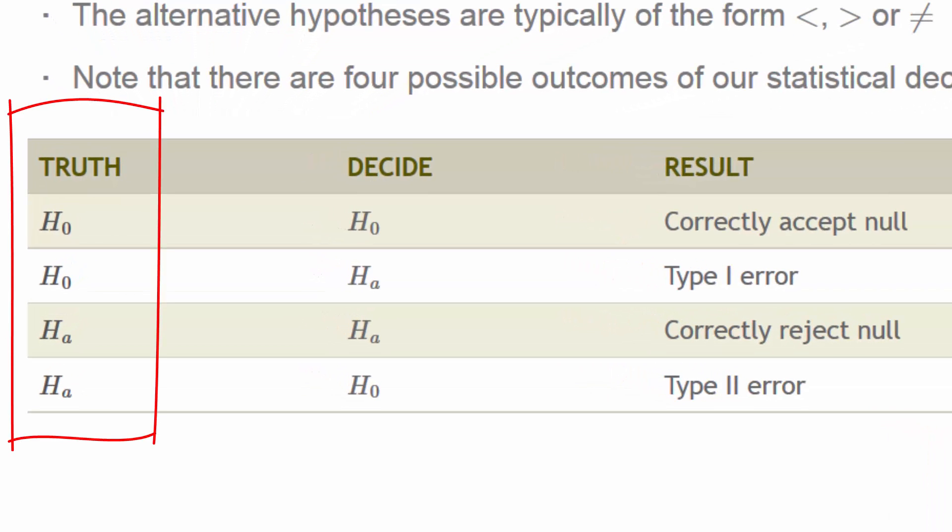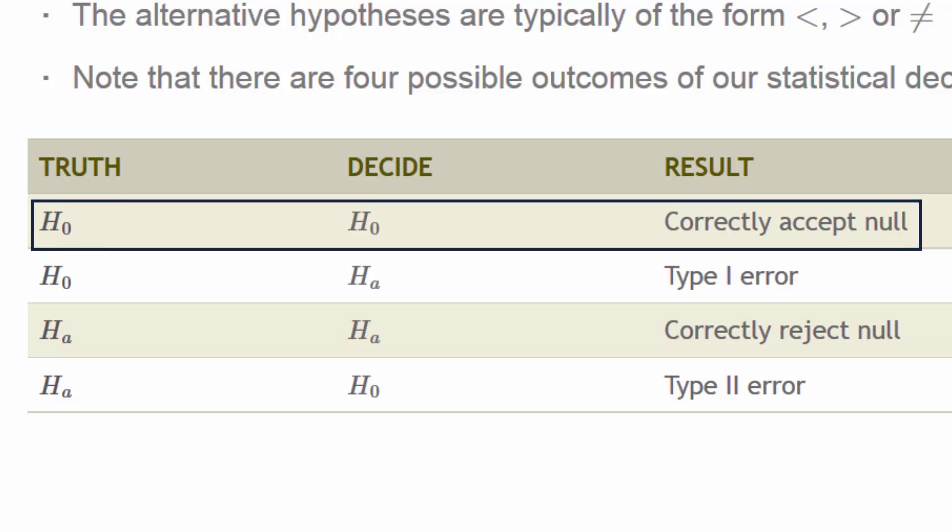Notice that the truth is either that H₀ is true or Hₐ is true, and we could either decide H₀ or decide Hₐ. Therefore there are only four possibilities. If the truth is H₀ and we decide H₀, we've correctly accepted the null hypothesis.